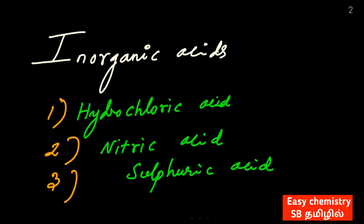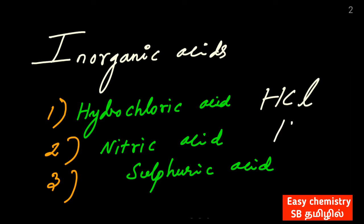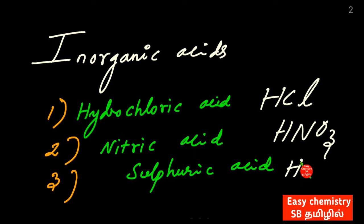In this formula, you can understand. Hydrochloric Acid is HCl. Nitric Acid is HNO3. Sulfuric Acid is H2SO4. Memorize this formula with the name. These three are inorganic acids.